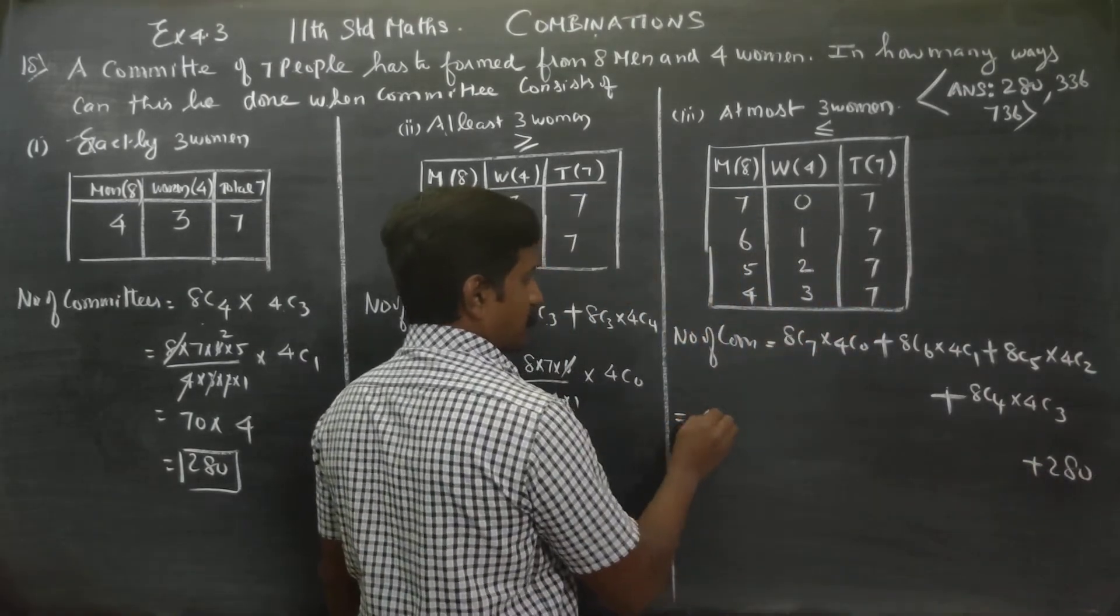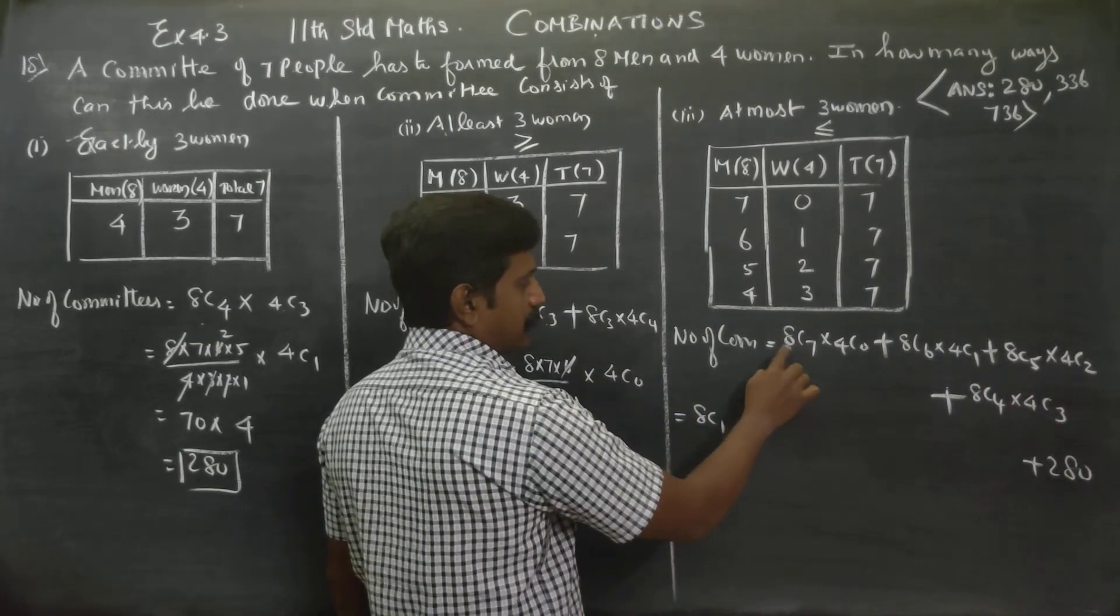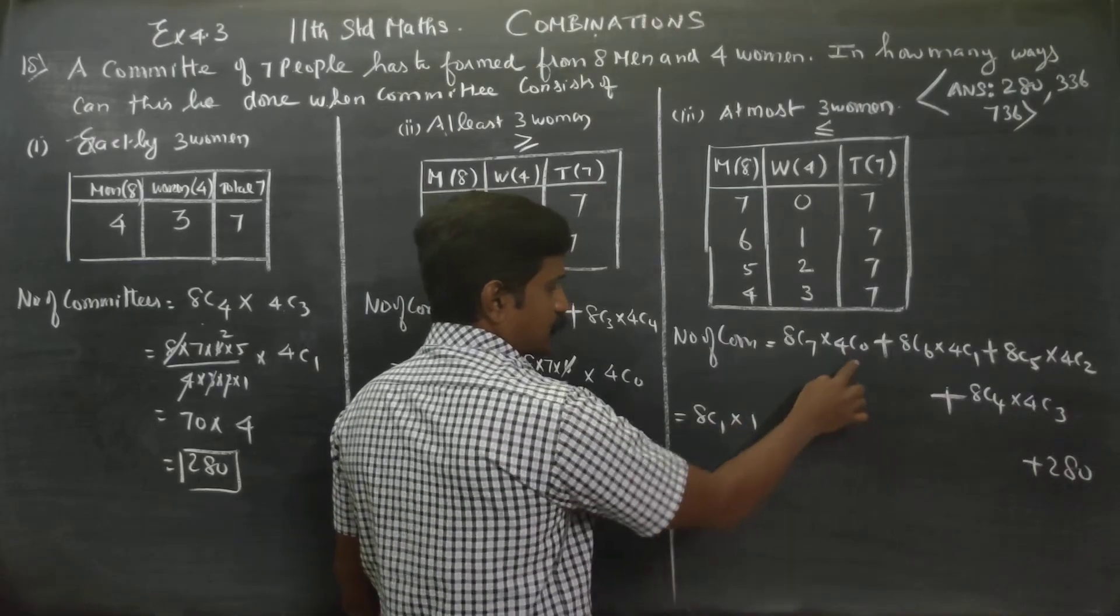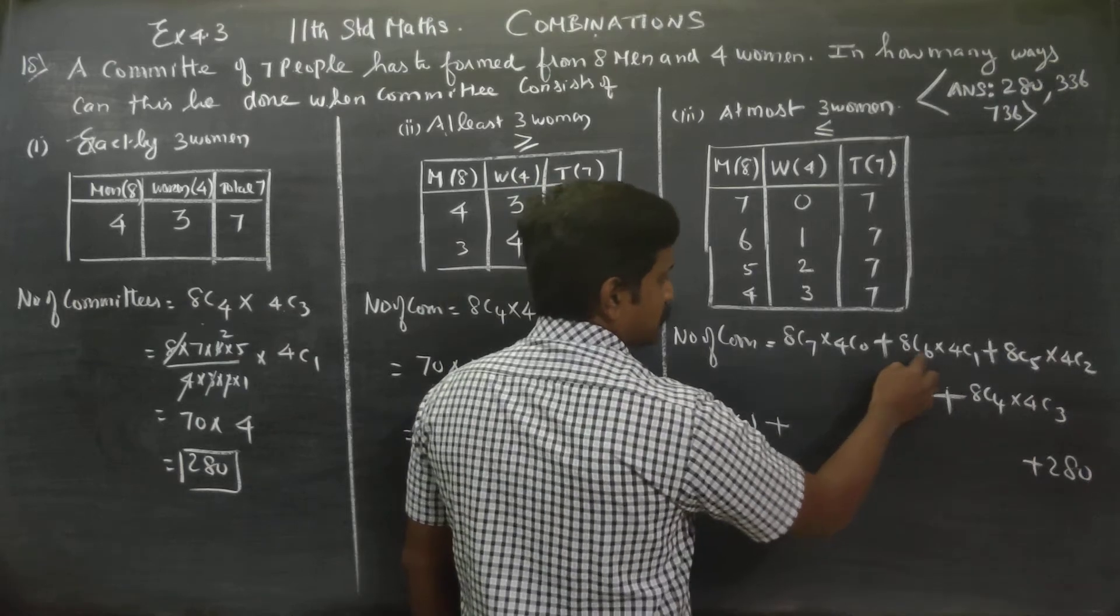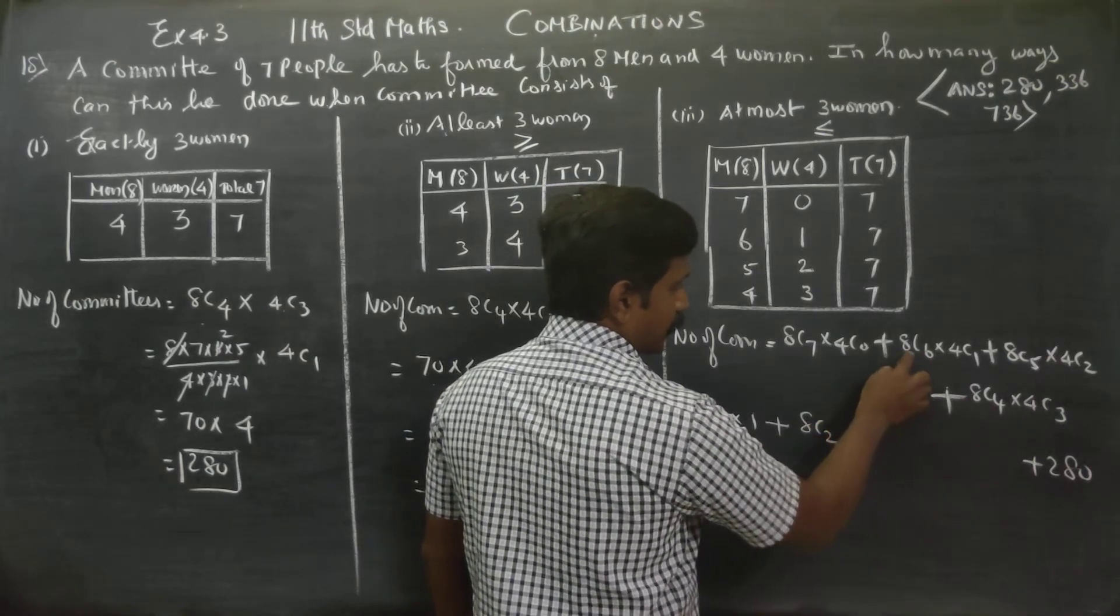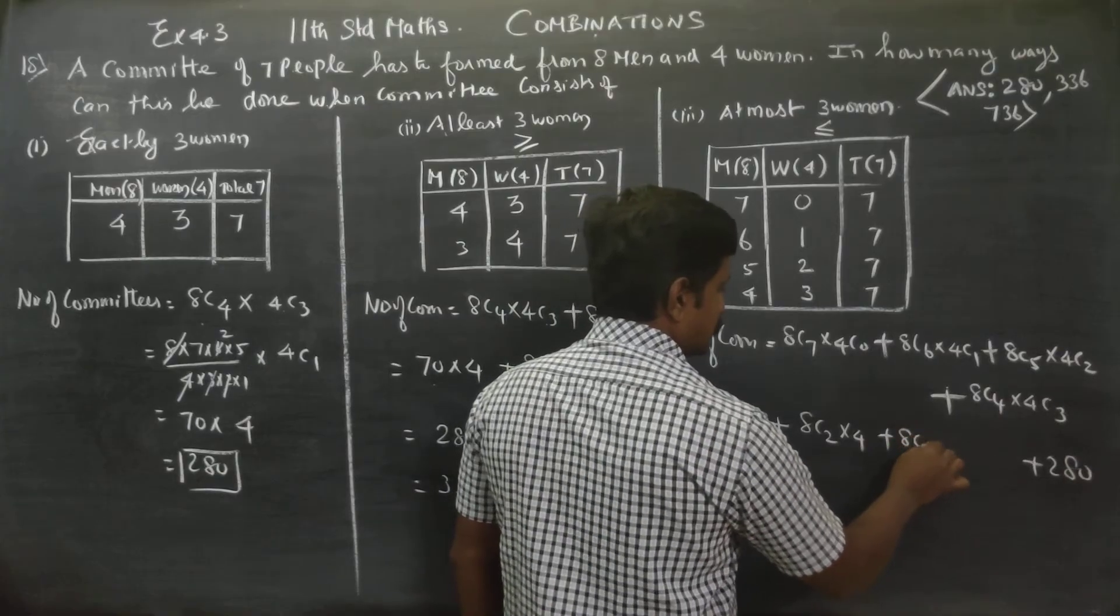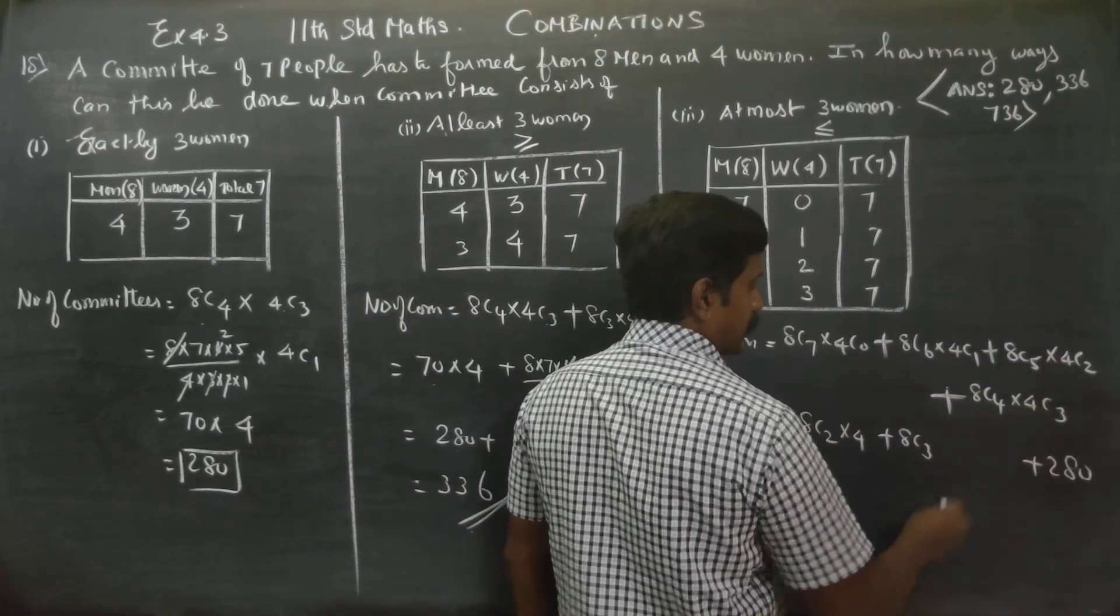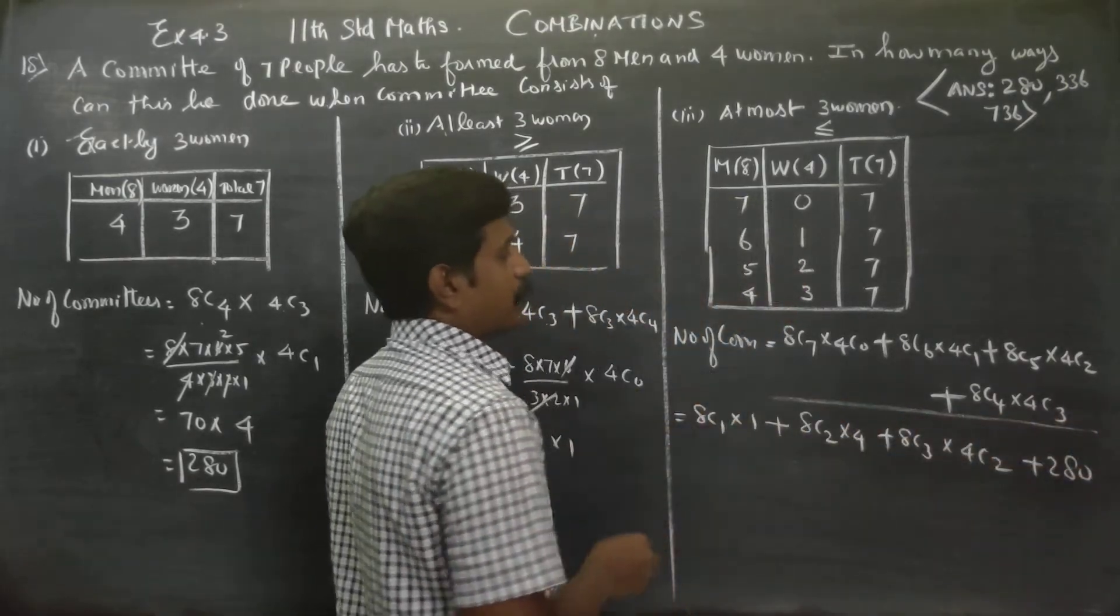8C7 can be written as 8C1. 4C0 is always 1. Plus 8C6 can be written as 8C2 times 4C1 which is 4. Plus 8C5 can be written as 8C3 times 4C2.